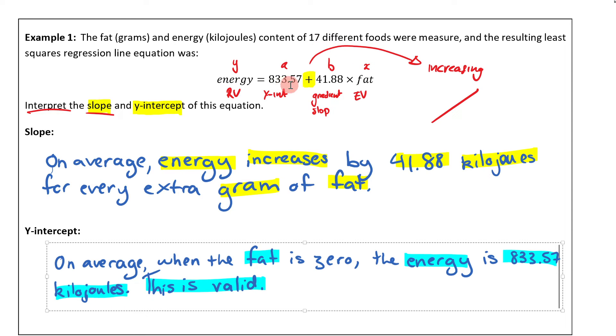In that case, it would be 83.57. So on average, when the fat is zero, the energy is what the y-intercept is. Make sure you add the statement 'this is valid' because this is a valid scenario. You can have something with zero fat, but let's be honest, that probably doesn't taste great, does it?